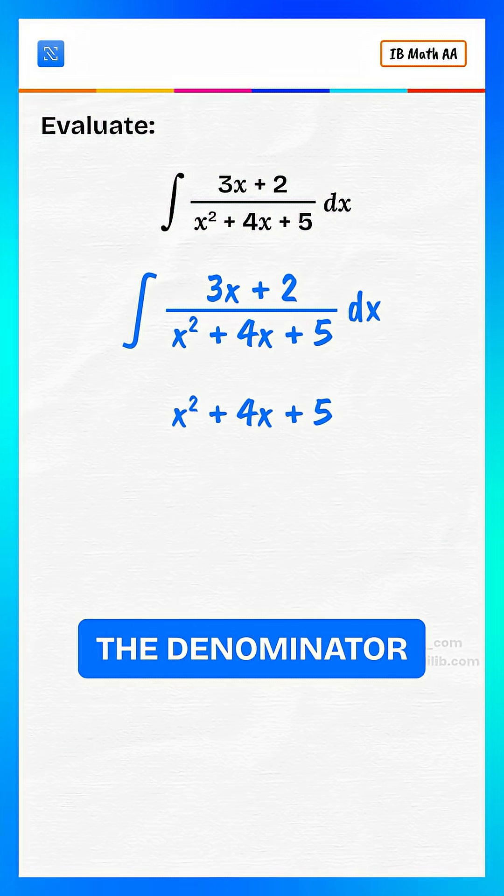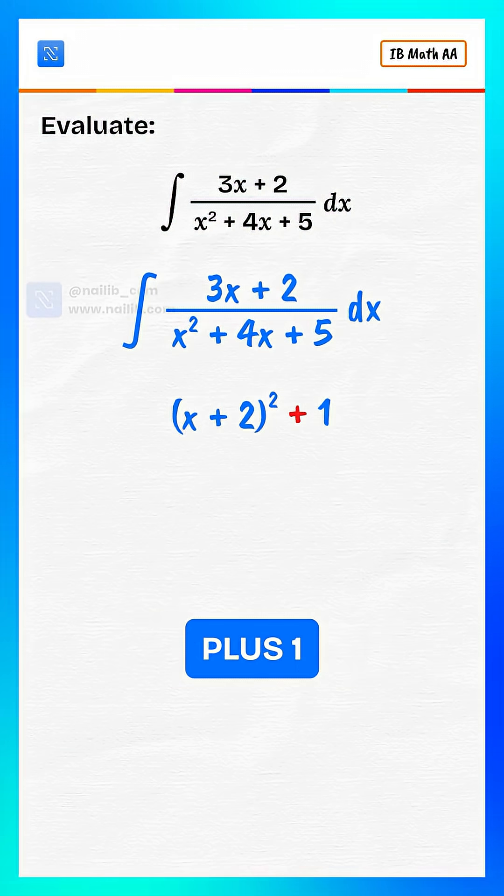Let's simplify the denominator. That becomes x plus 2 squared plus 1.